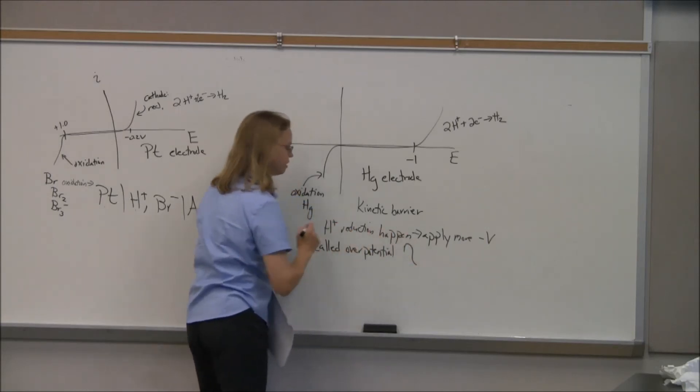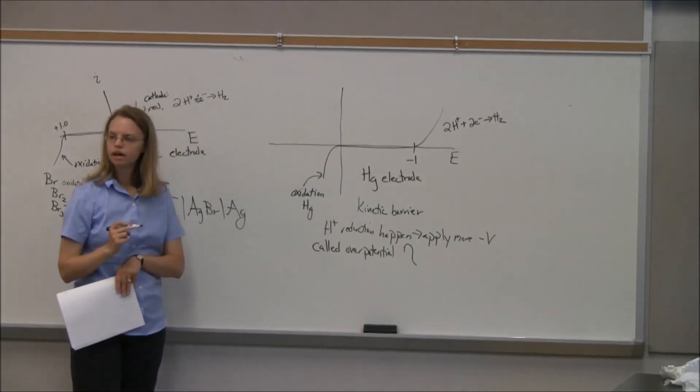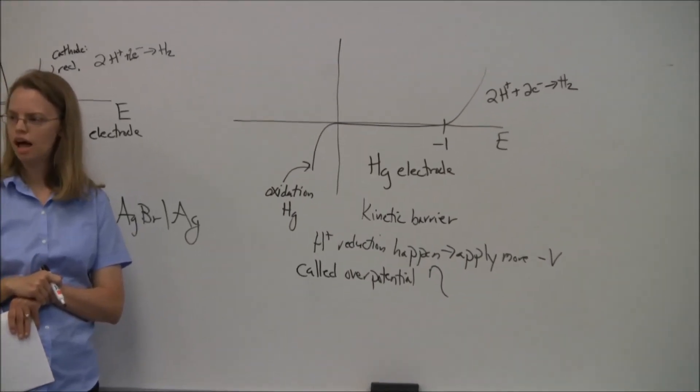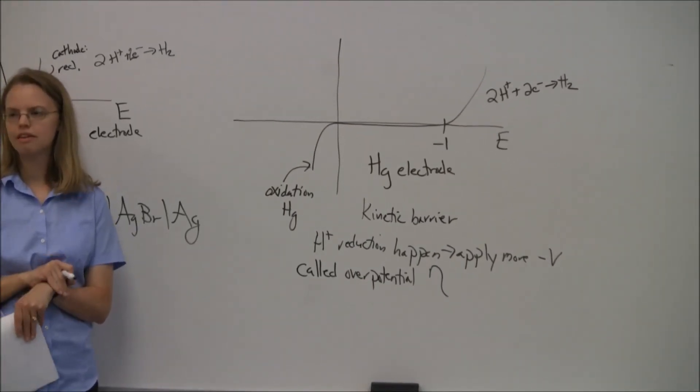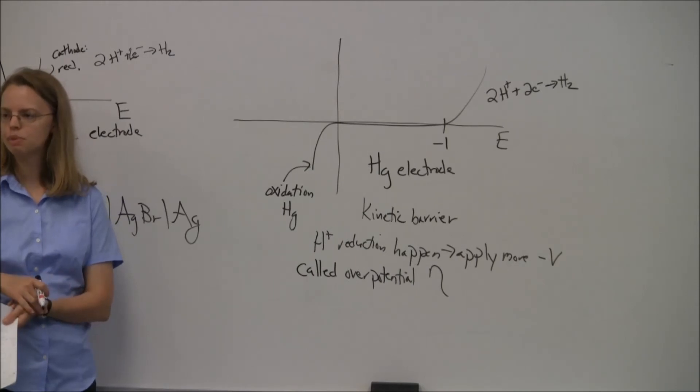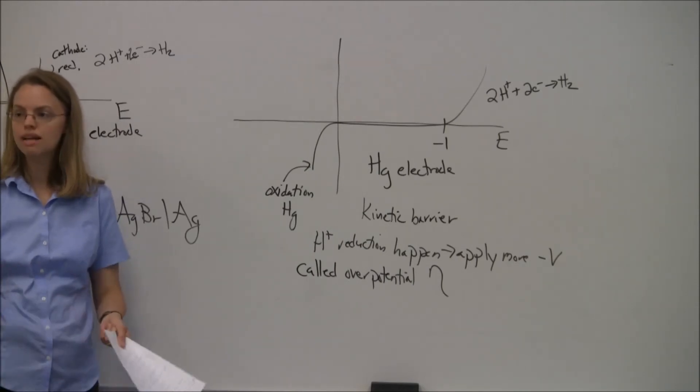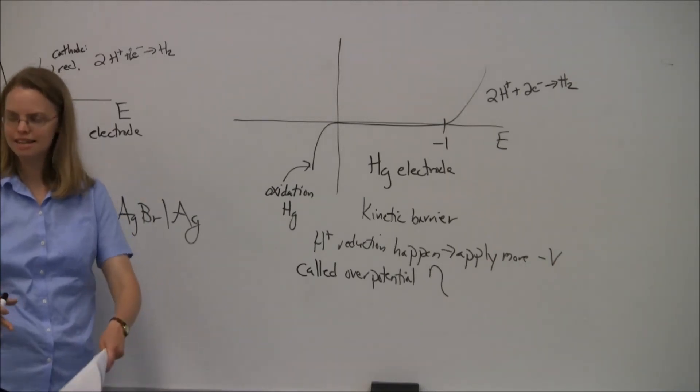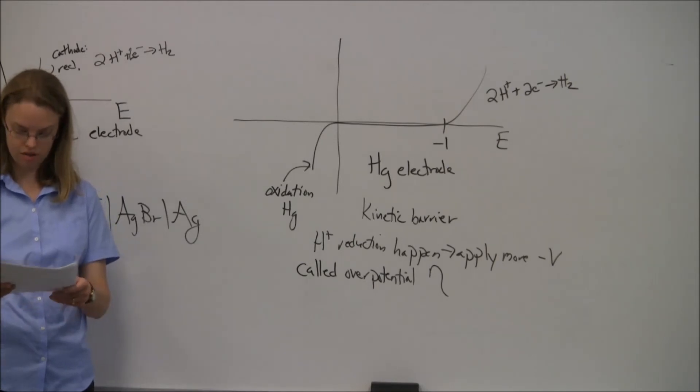That's given the symbol eta. So electrochemists talk about over-potential a lot. Because the problem is the textbook breaks down. The textbook says it's pretty bad, it has this potential, and then it doesn't have that potential. And it's almost always that you have to add additional energy to get something to go.